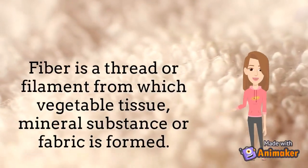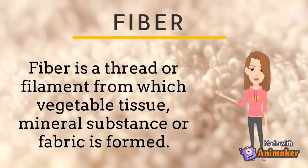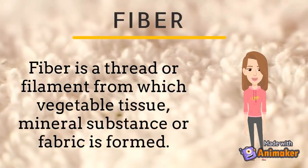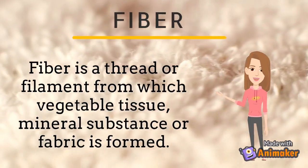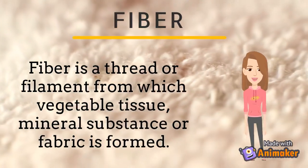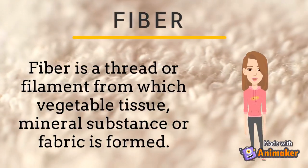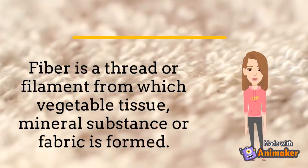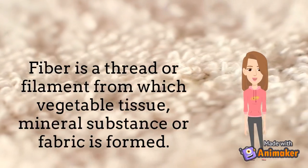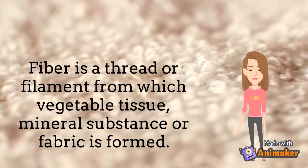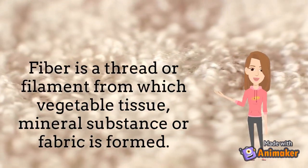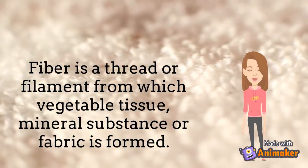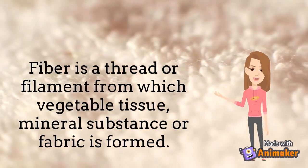Fiber is a thread or filament from which vegetable tissue, mineral substances or fabric is formed. Basically, fiber is a thread which is the smallest unit of a fabric, or the basic unit from which fabric or cloth is formed. In this chapter, we will study how fiber turns into fabric or the clothes we wear.